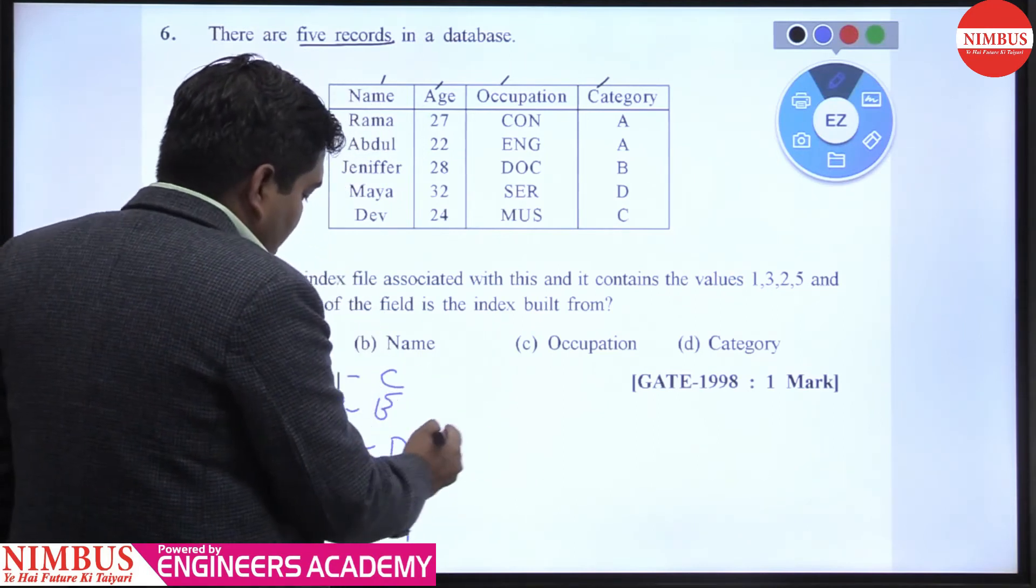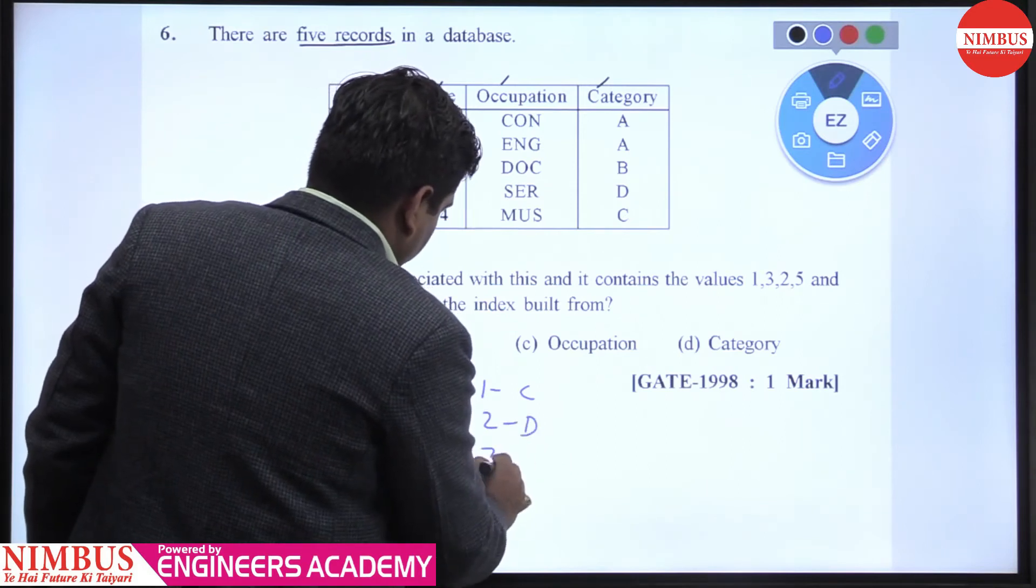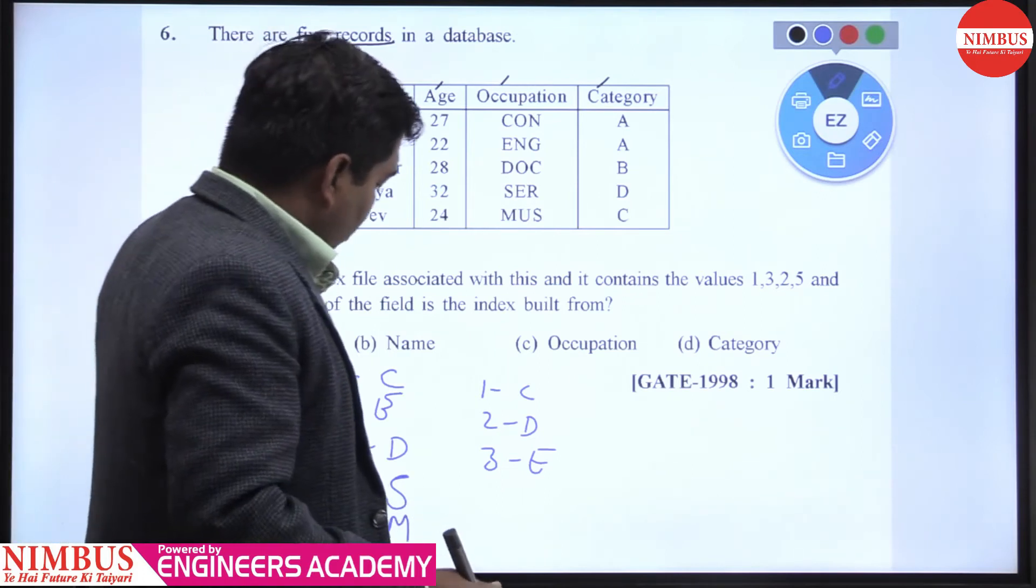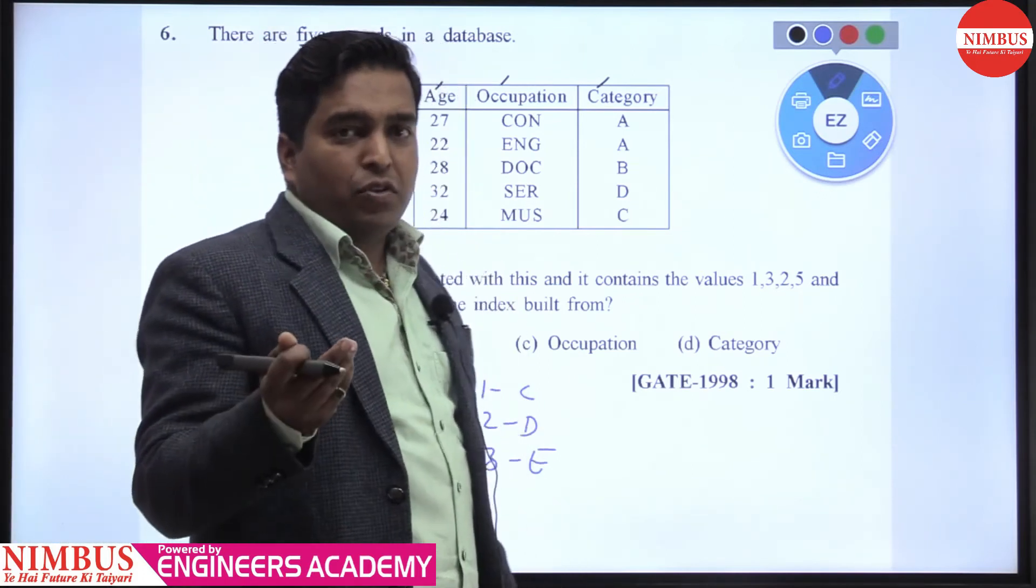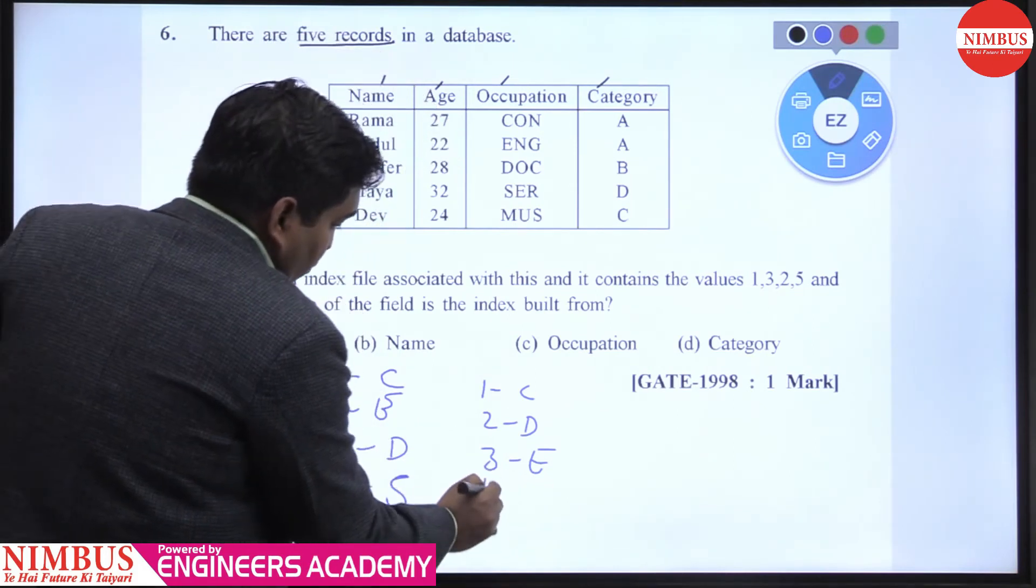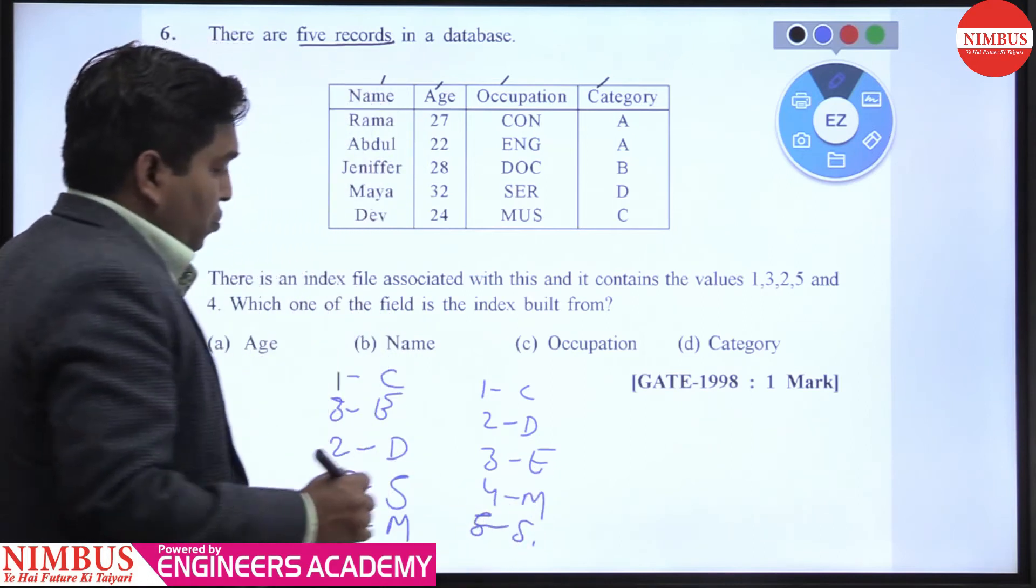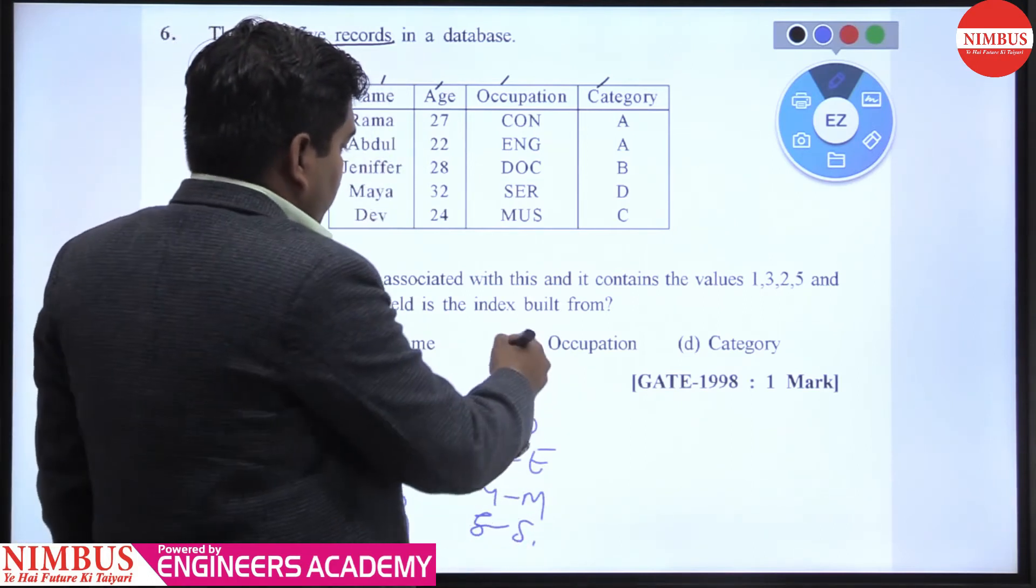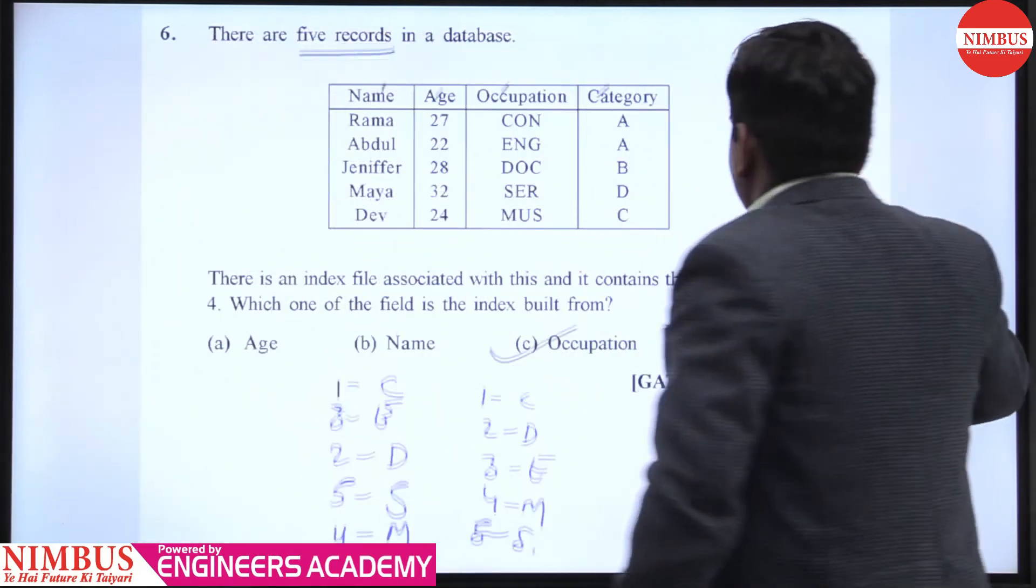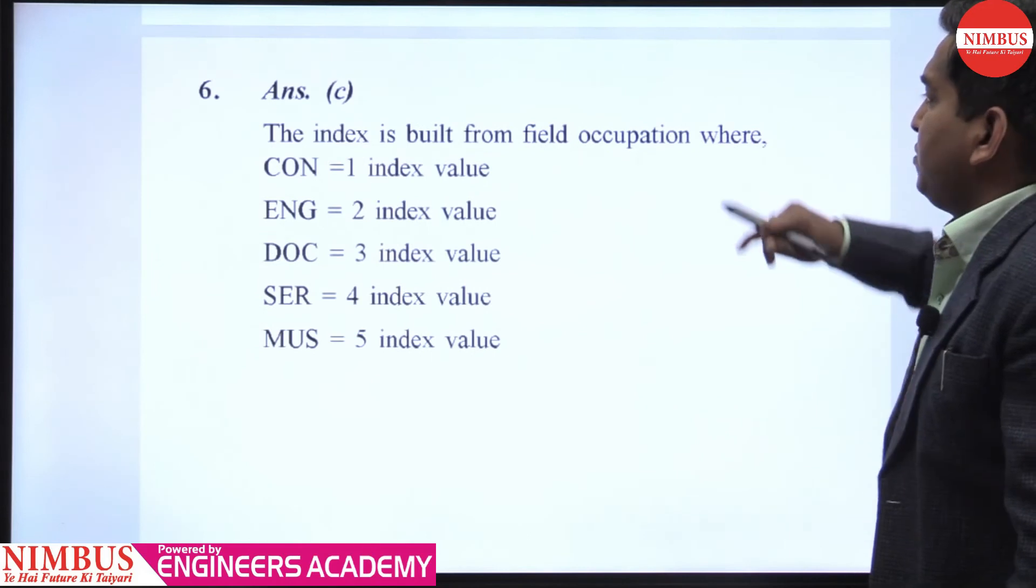Two for D and three for E. Yes, it's valid. And what about M and S? First of all, M-N-O-P-Q-R-S. So first is M, that is four, and five is S. So here you can see the index is built from occupation.